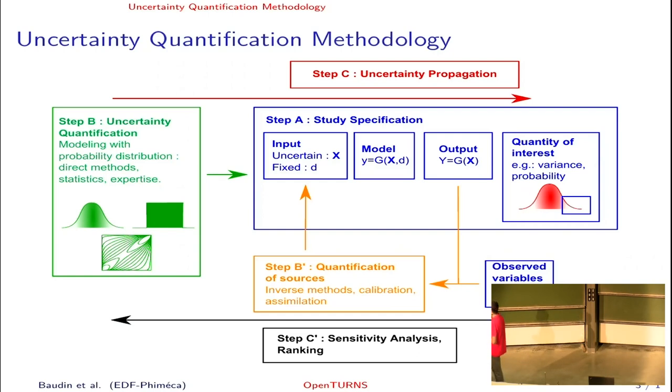We suppose we have some inputs of this computer code, some of which are fixed (the D variables), and some of which are uncertain, denoted by X. Forget about the D variables. If X is an uncertain random variable, then the output Y is also a random variable which has some distribution. We are interested in some quantity of interest of these distributions, for example the mean of the Y variable, or the variance, or the probability that the output exceeds a given threshold.